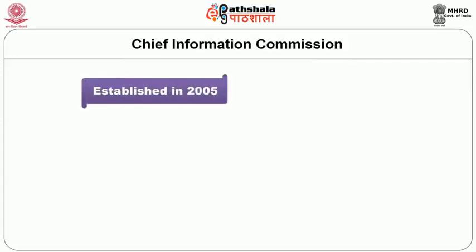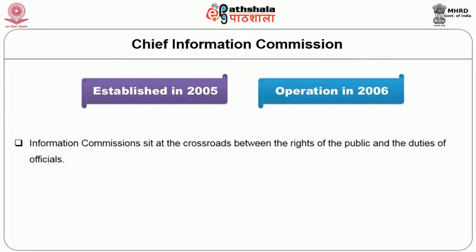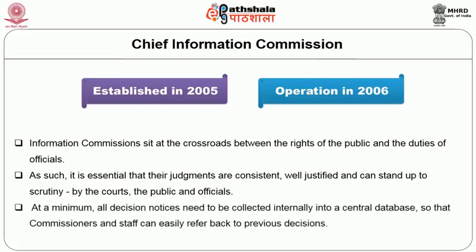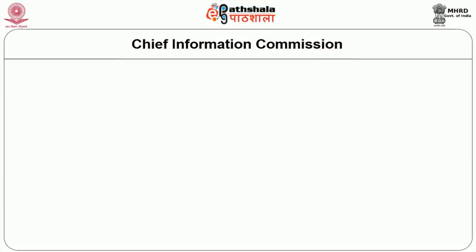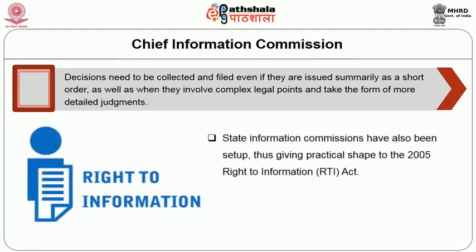The Chief Information Commission was established in 2005 and came into operation in 2006. Information commissions sit at the crossroads between the rights of the public and the duties of officials. As such, it is essential that their judgments are consistent, well justified and can stand up to scrutiny by the courts, the public and officials. All decision notices need to be collected internally into a central database so that commissioners and staff can easily refer back to previous decisions — including those issued summarily as short orders as well as those involving complex legal points. State information commissions have also been set up, giving practical shape to the 2005 RTI Act.